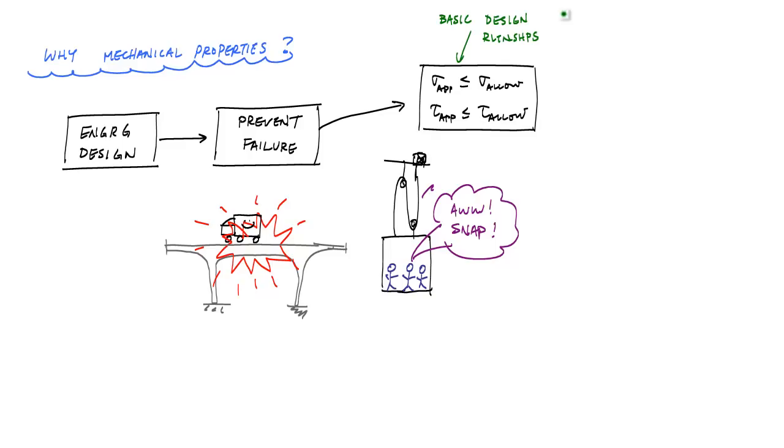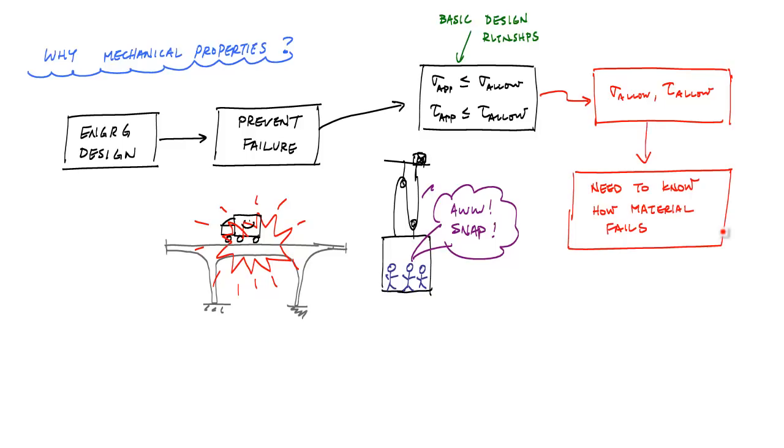In order to put limits on what we define as safe, we have to define what is considered failure. The sigma allow, these allowable stresses that we as engineers choose, are a way for us to define how, if, or when something fails. In order for us to define these allowable stresses, we have to have an understanding of how the material behaves that we choose and how it fails.